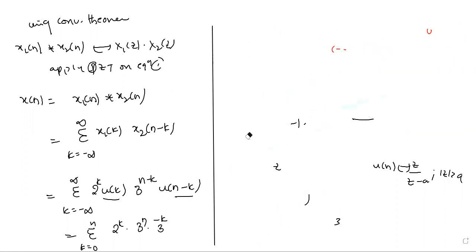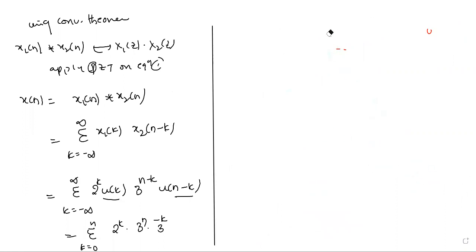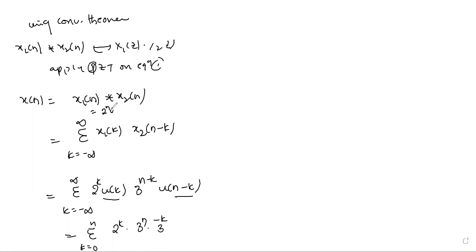The output is the convolution between 2 to the power n times u of n and 3 to the power n times u of n. So directly I am implementing the convolution formula. In our problem, X1 of n convolved with X2 of n is: 2 to the power n times u of n, convolved with 3 to the power n times u of n — that is what we are computing now.